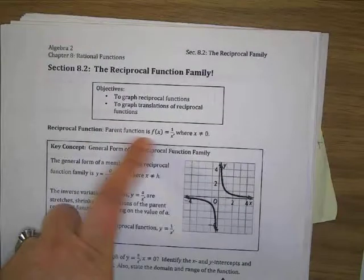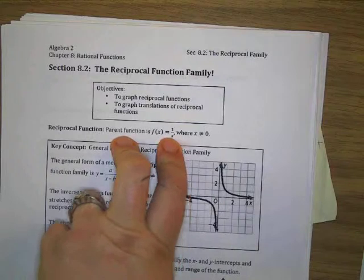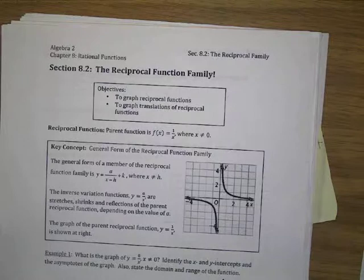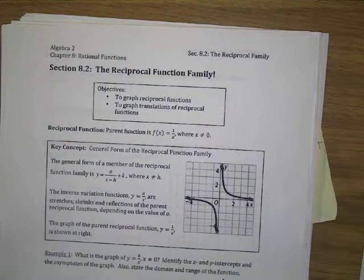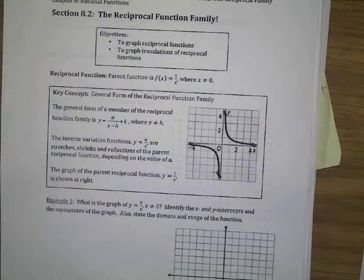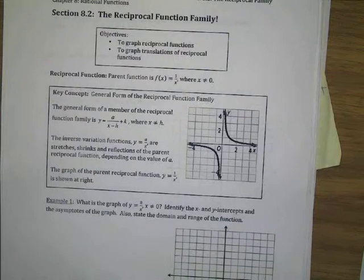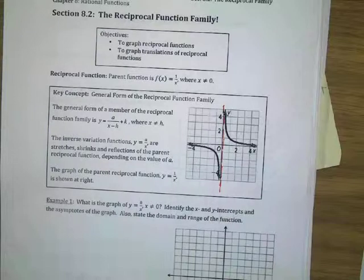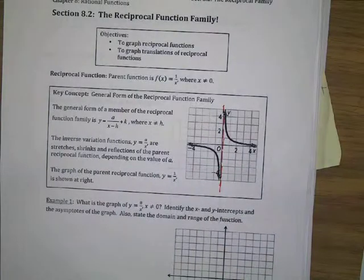This is the reciprocal function. The parent function is f of x equals 1 over x, and it does say where x is not allowed to be 0. Why is x not allowed to be 0? Because you can't divide by 0. So if you look at this function right here, there's a couple things going on.